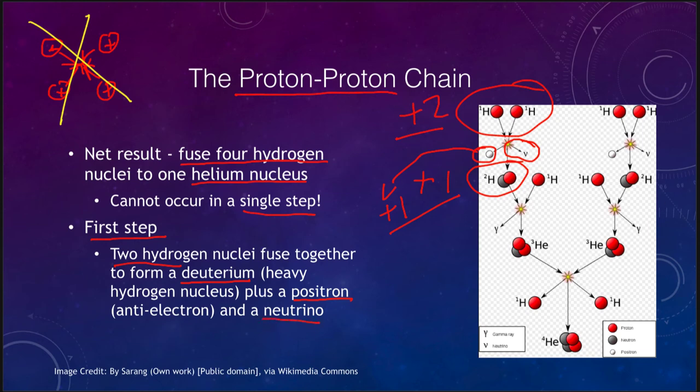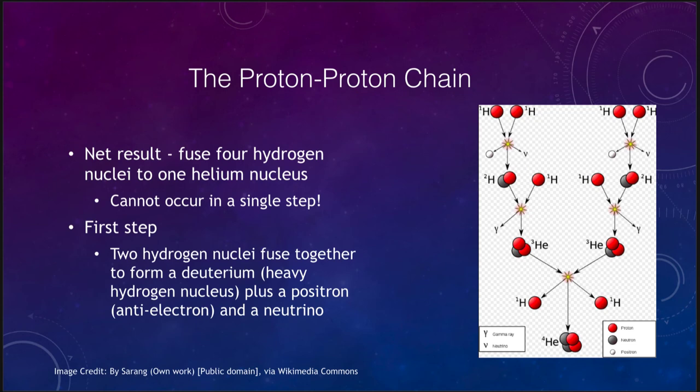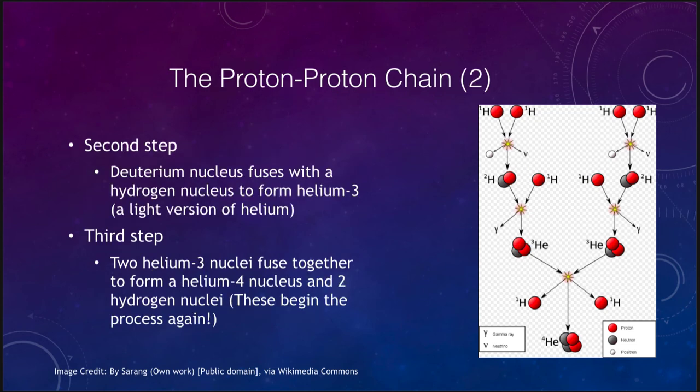In the next step, the deuterium nucleus merges with another hydrogen nucleus to form helium. But this is helium-3, a lighter version of helium with two protons and one neutron. Normal helium would have two protons and two neutrons. This also gives off energy in the form of a gamma ray.